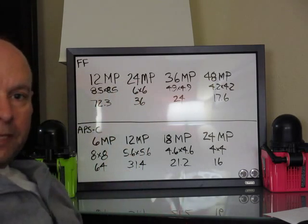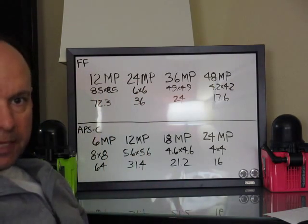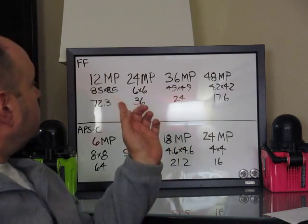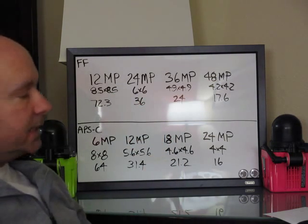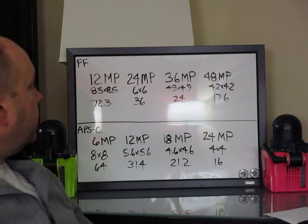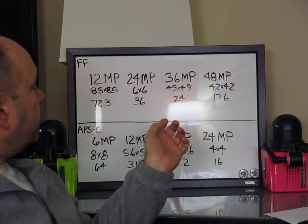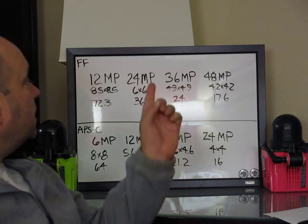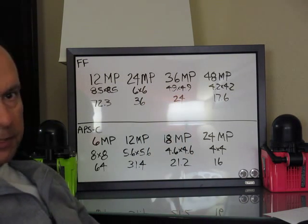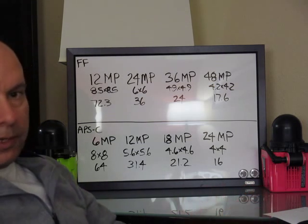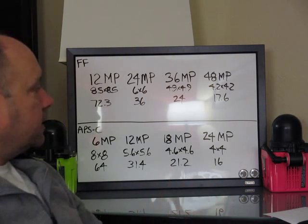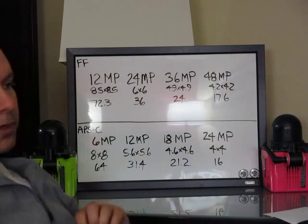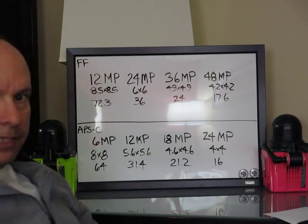So if it's a 12 megapixel sensor, it's 8.5 microns by 8.5 microns, 72.3 square microns. 24 megapixel, 6 by 6, 36 square microns. 36 megapixel camera, 4.9 by 4.9 microns, 24 square microns. And lastly, the 48 megapixel camera, 4.2 by 4.2 microns, 17.6 square microns. So now, that's just technical stuff. But where I'm going with this is, what are the applications?